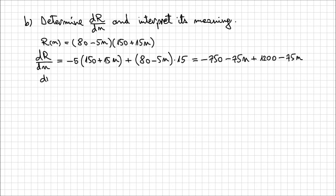So we can conclude that dR/dn = −150n + 450, or factoring out 150: dR/dn = 150(3 − n). This derivative represents nothing else than the rate of change of the revenue for each $5 price decrease.